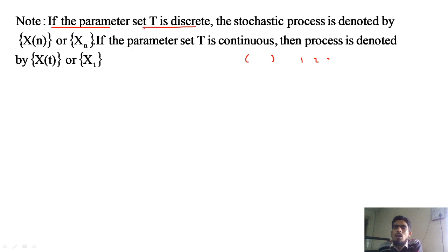If the parameter set T is discrete — meaning you can count it, like 1, 2, 3, 4, 5, 6 — the stochastic process is denoted by x(n) or x subscript n, where n takes the first value, second value, third value, and so on. If T is discrete, then the stochastic process will be defined accordingly.